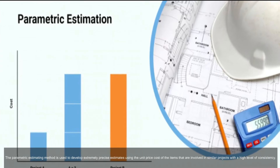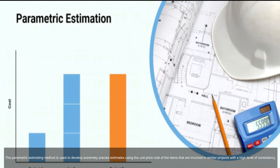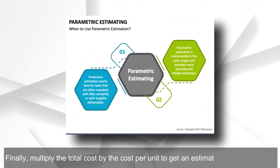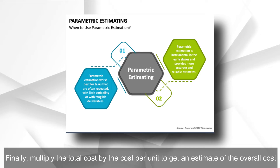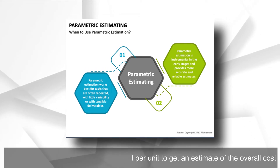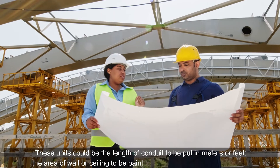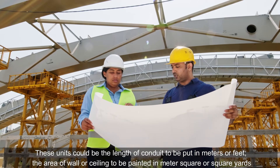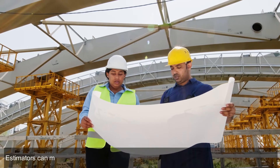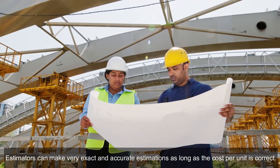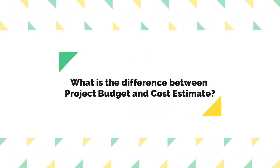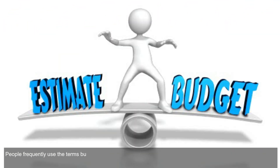Parametric estimating: this method is used to develop extremely precise estimates using the unit price cost of items involved in similar projects with a high level of consistency. Multiply the total quantity by the cost per unit to get an estimate of the overall cost. These units could be the length of conduit in meters or feet, or the area of wall or ceiling to be painted in square meters or square yards. Estimates are accurate as long as the cost per unit is correct.